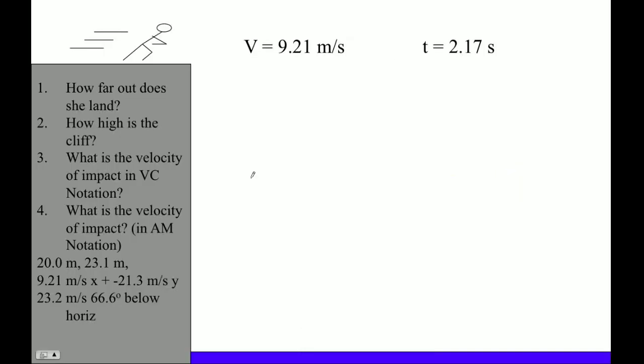So let's go ahead and do a cliff problem like this. And the trick here is that we want to do one of these little tables. Horizontal is this way, vertical is that way: U, V, A, T. And the only thing that's the same is time. Time is on both sides.